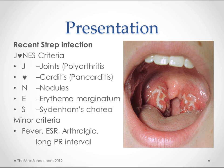The minor criteria are fever, an elevated sed rate, arthralgias, and prolonged PR interval. One thing to be careful with is that arthralgia is not equivalent to the polyarthritis. So on a test question, you might see an arthralgia and mistake it for being a major criteria.